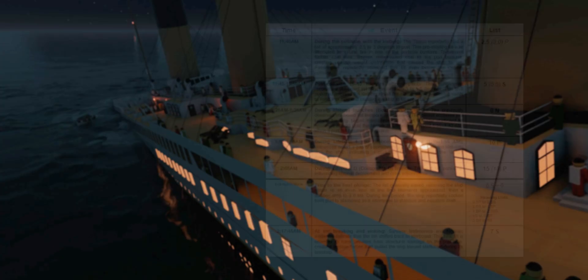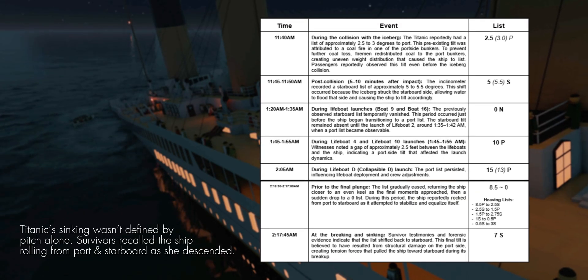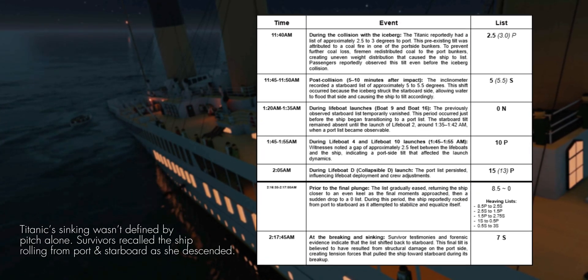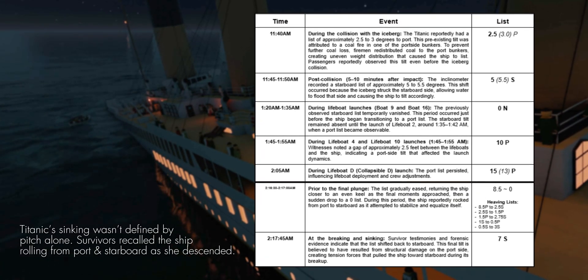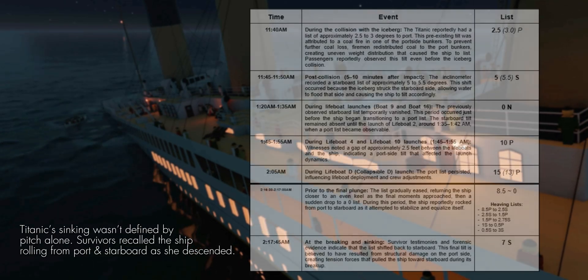From our previous episode, we examined the Titanic's changing headroom — the forward angles she reached as she dipped deeper into the Atlantic. But the ship's descent was not defined by pitch alone. Survivor testimonies revealed that the Titanic did not sink on a perfectly level keel. Instead, she rolled noticeably from port to starboard at various moments throughout the disaster.